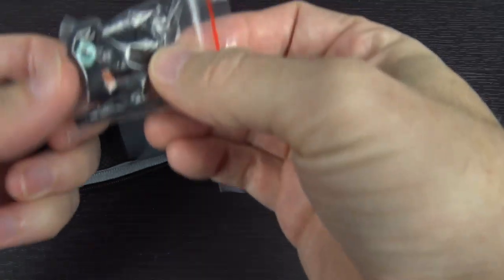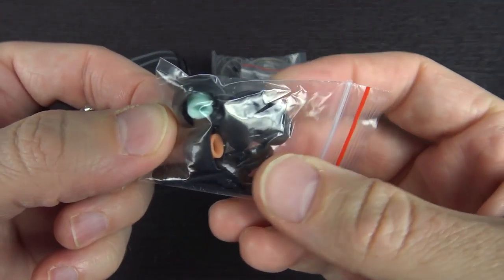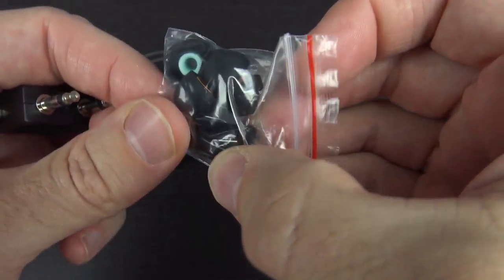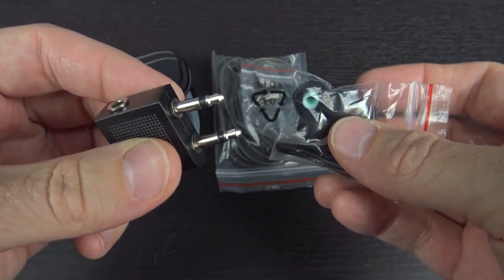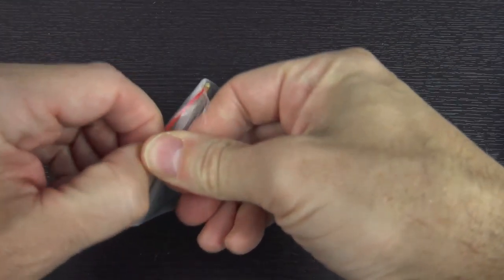Inside the case, you get an additional two sets of silicon tips, color-coded, very nice, with a clip so you can clip this to your body, and an airplane splitter in case you need it, and then the earbuds themselves.